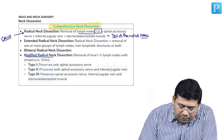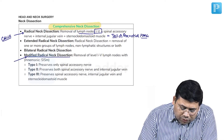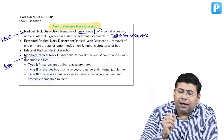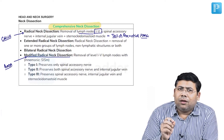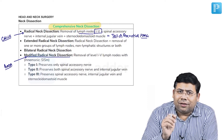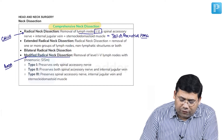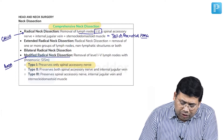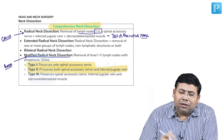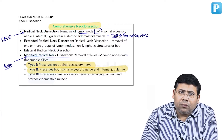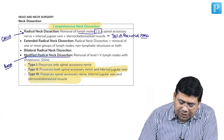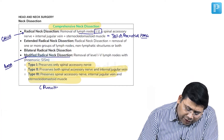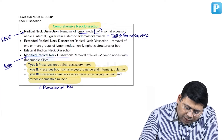There was a modification done, which is MRND, and this was done by Boka. The classical MRND was the same as radical, except the spinal accessory nerve was not resected. Today, we call it Type 1 where we preserve the spinal accessory nerve. If we preserve the spinal accessory with the internal jugular vein, it is Type 2. If we save all three structures, it is Type 3, also known as functional neck dissection.